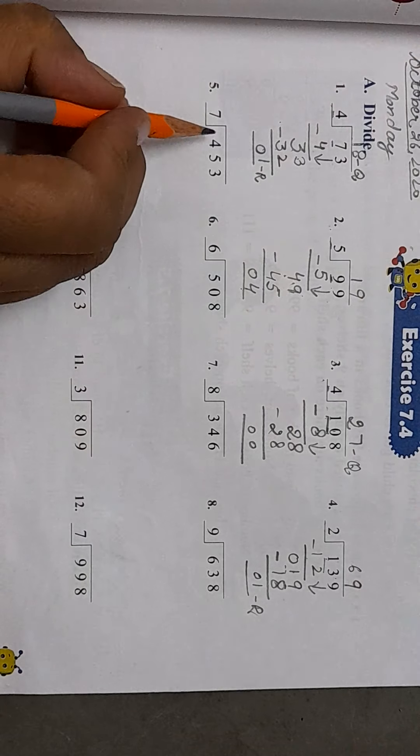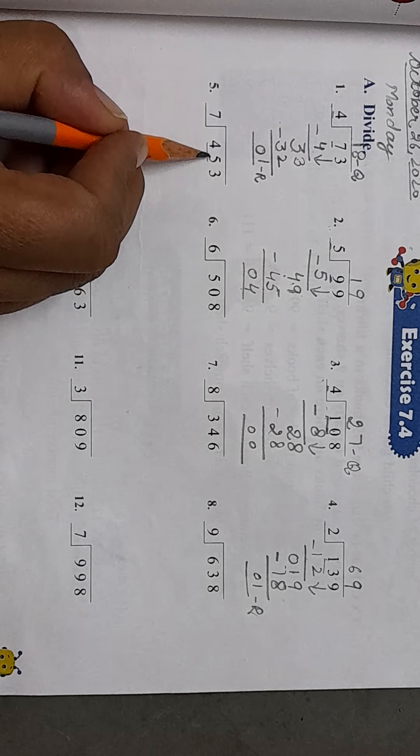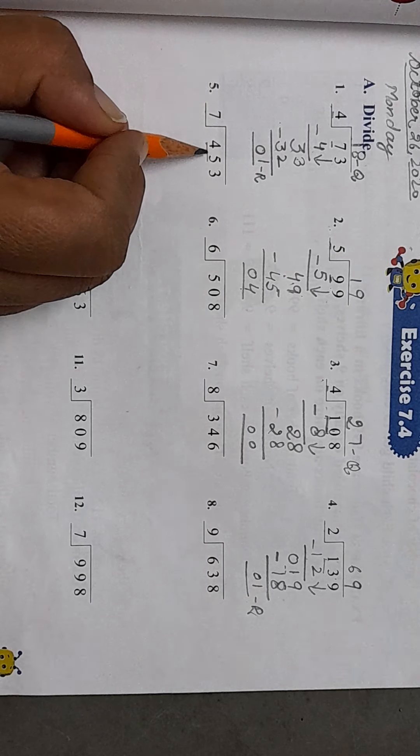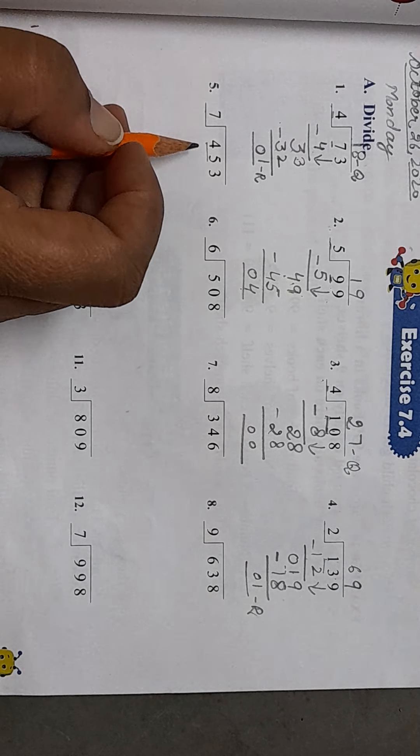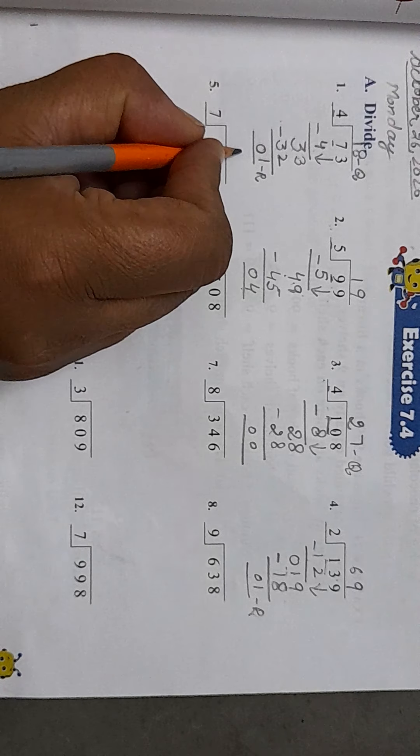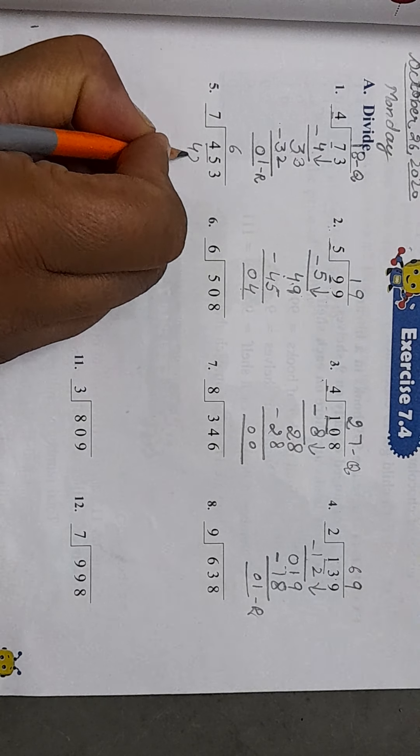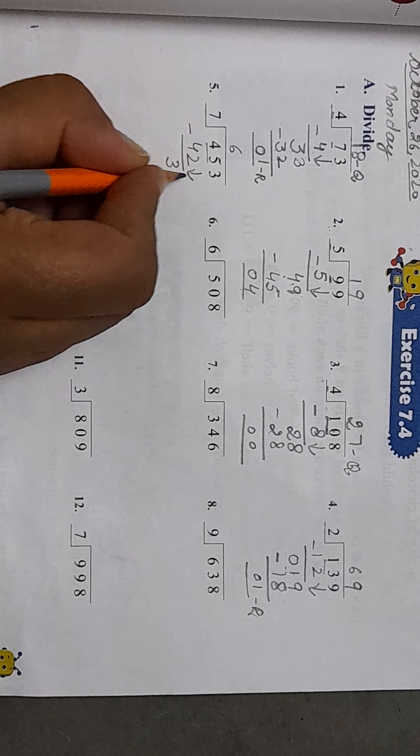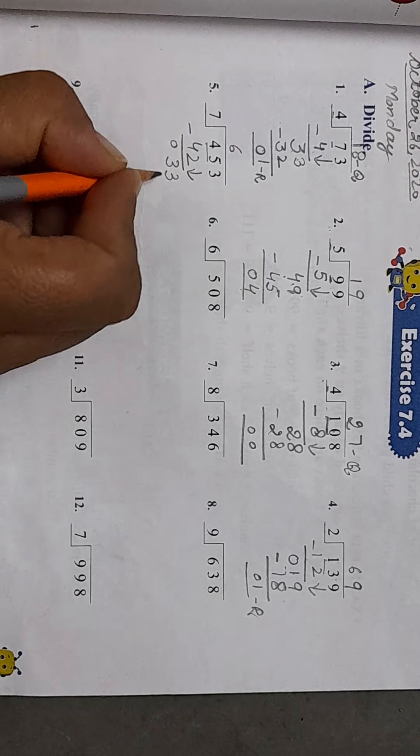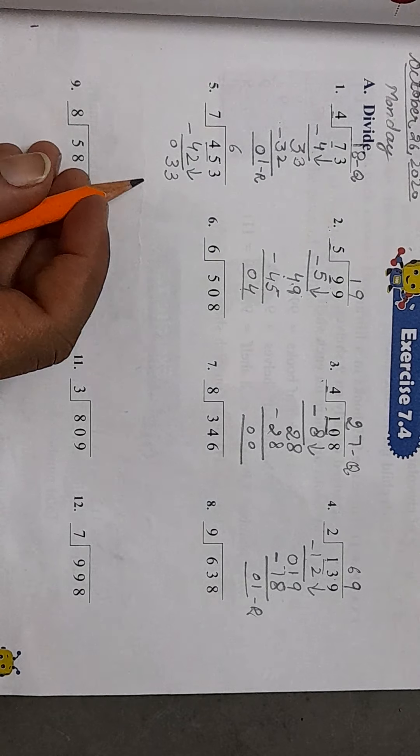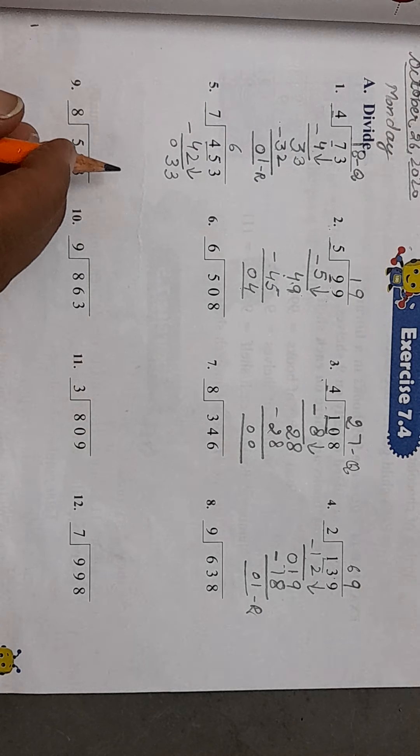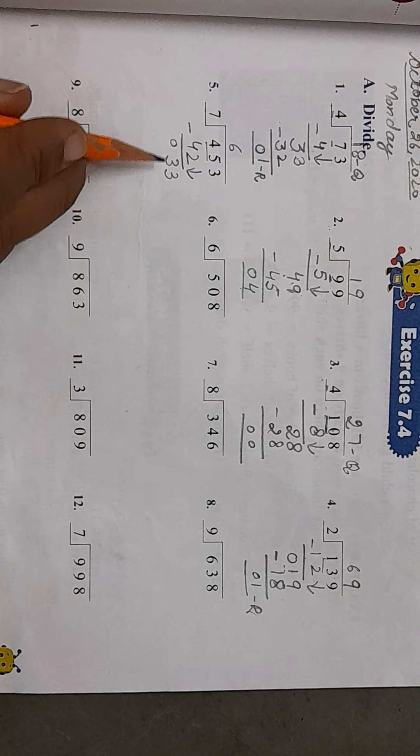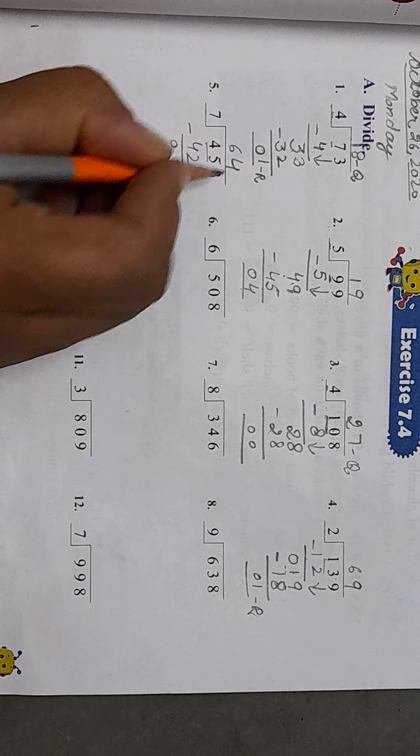Now look at the next one. We will take the two numbers because the first number is less than the divisor. So it's 45. Does 45 come in the table of 7? No. What comes? 7 sixes are 42. Now 5 minus 2 is 3 and we will bring down 3 here. Now it's 33. Does 33 come in the table of 7? No. 7 fives are 35, 35 is also greater than 8. So 7 fours are 28.